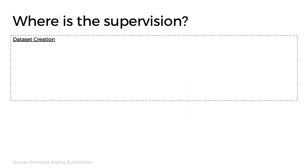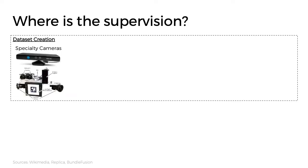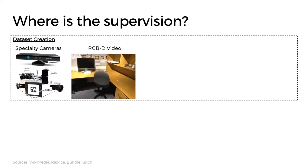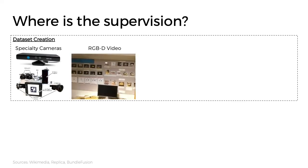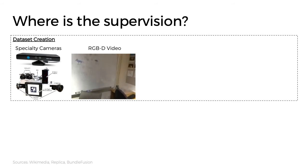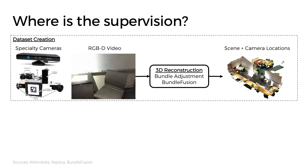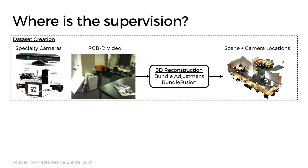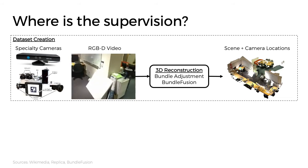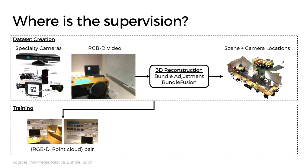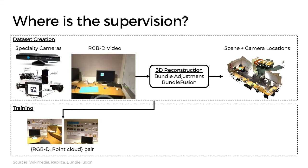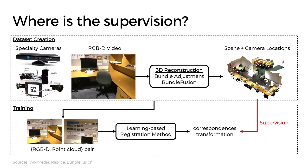But how do we get this supervision? To answer this, let's consider the common framework for geometric feature learning. Typically, we start with special capture devices such as the Microsoft Kinect, or even more complex setups such as the one used by the Replica dataset. We then take an RGBD video of the scene, making sure to carefully scan every surface to get full coverage. This video is then used to reconstruct the scene using 3D reconstruction systems such as VoxelFusion. Longer videos that carefully cover the scene result in more accurate reconstructions. For training, we can sample point cloud pairs from either the video frames or crops of the reconstructed scene, and train a geometric feature encoder using supervision from the reconstruction. While successful, this approach's reliance on carefully captured video and 3D reconstruction systems limits its scalability.